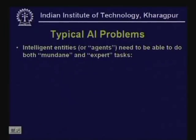Let us look at typical AI problems. Intelligent entities or agents need to be able to do different types of tasks. Some tasks are mundane tasks that we do as a matter of fact in daily life, and there are tasks we consider expert — like solving difficult mathematical problems or playing chess at an expert level.